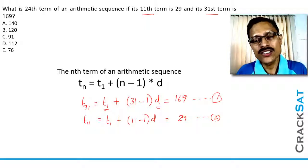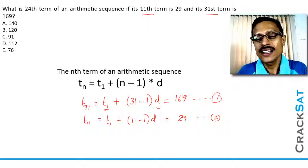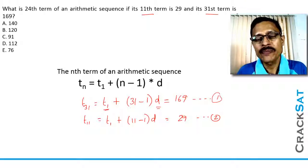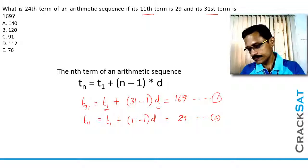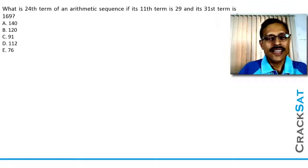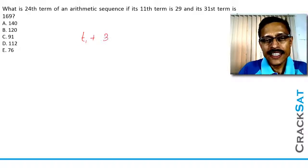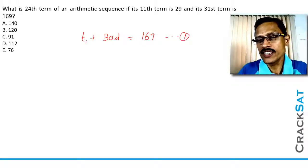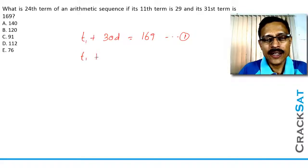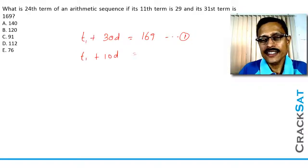So we have expressed both the 11th term and the 31st term in terms of the first term and the common difference. We now have two equations and two unknowns — the first term and the common difference. We will solve these as simultaneous equations. Writing them clearly: T1 plus 30d equals 169, and T1 plus 10d equals 29.